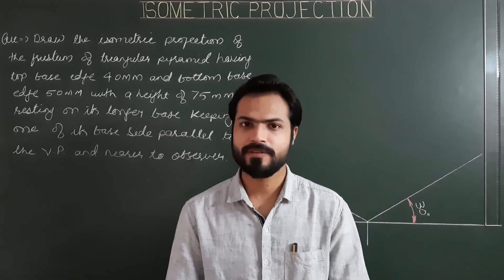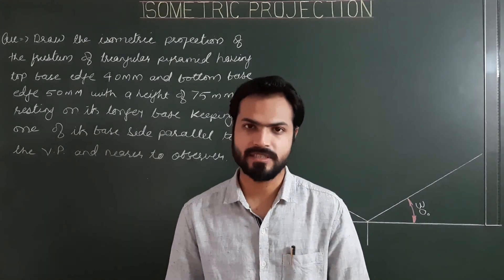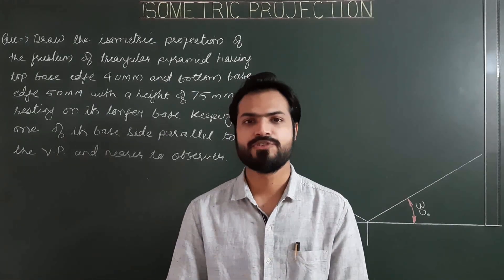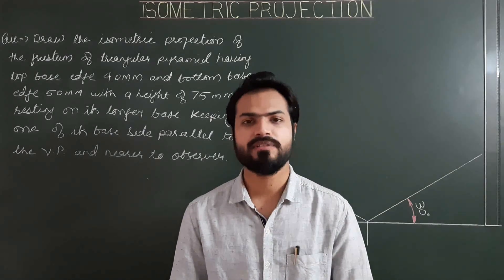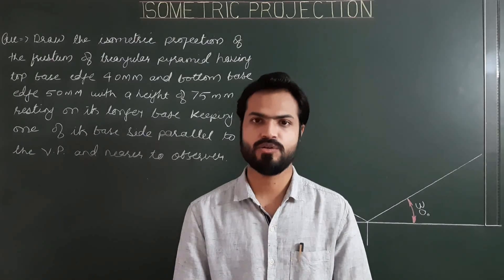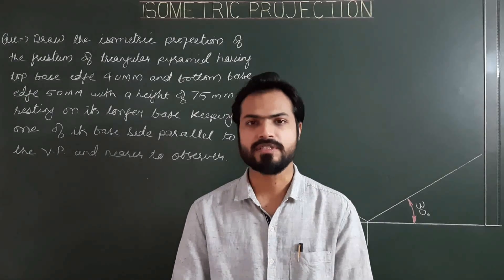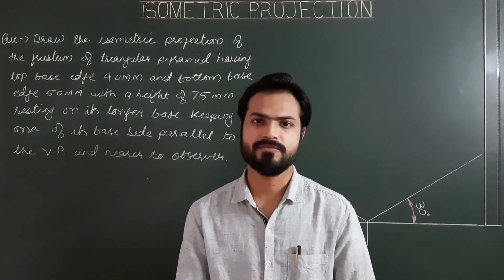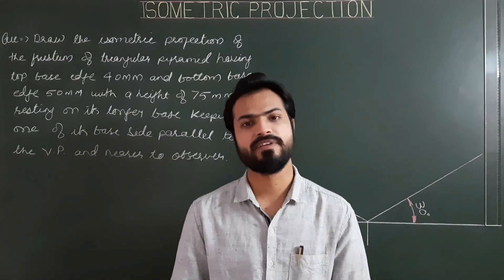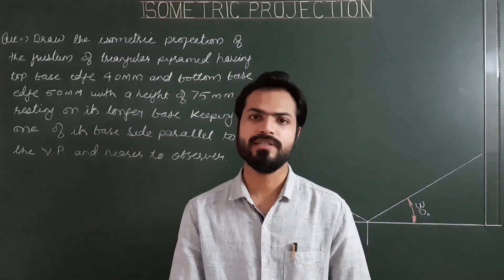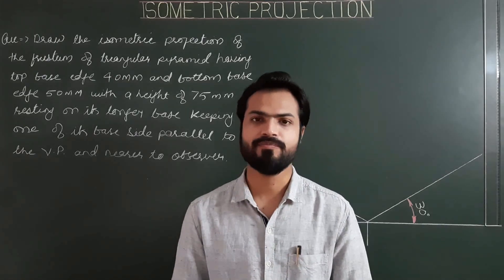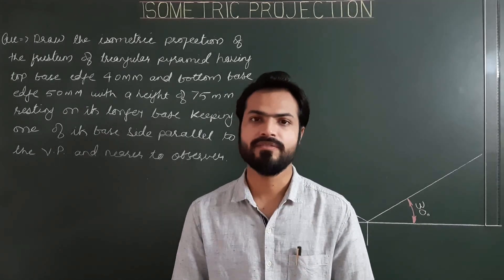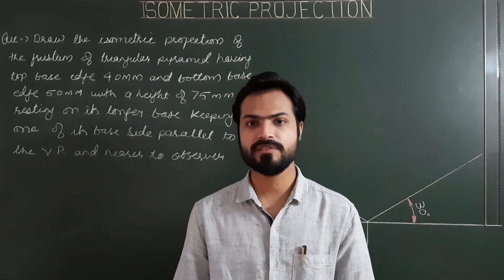Hello everyone. Hope you have completed all the problems we discussed in the first part of isometric projection — that is, isometric projection of single solids. So far we have discussed prism, pyramid, sphere, hemisphere, cone, cylinder, frustum of cones, and frustum of regular geometrical pyramids. Frustum is very important because all solids except frustum are in the syllabus of combination of solids.